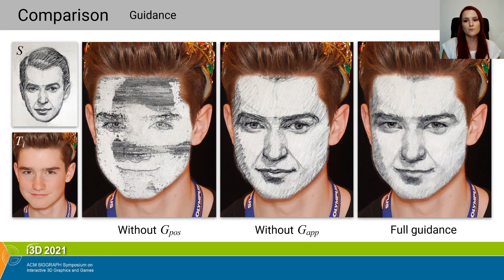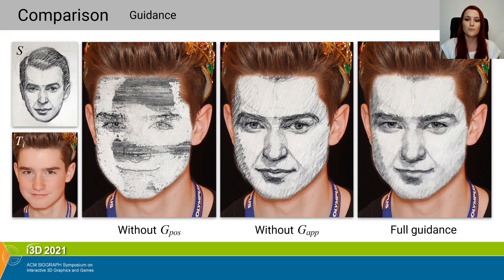Here we demonstrate the importance of individual guiding channels. On the left we show the result without the positional guide, where the missing information causes chunks to not be transferred from corresponding locations. Without the appearance guide, the stylization is semantically meaningful, but the identity of the target subject is not preserved at all. The result with our full guidance is shown on the right.